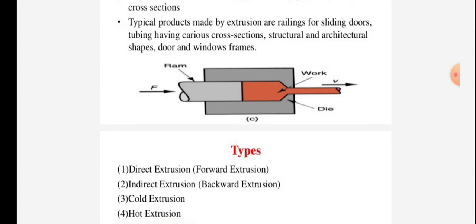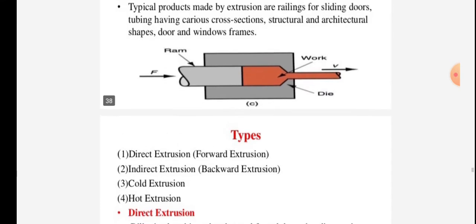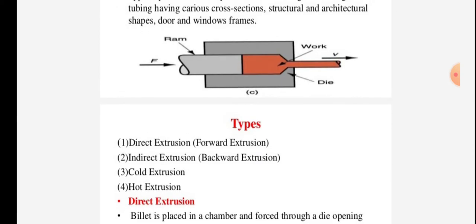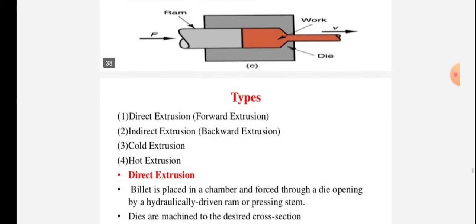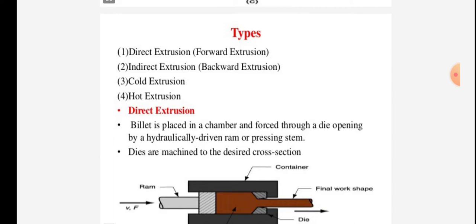As shown in figure, the RAM, work, and die. The RAM is pushed with force and velocity V to produce the work shape. Types of extrusion are direct extrusion (forward extrusion), which is also called forward extrusion.